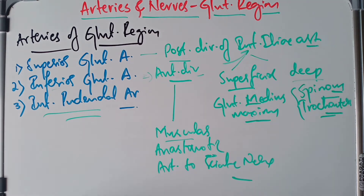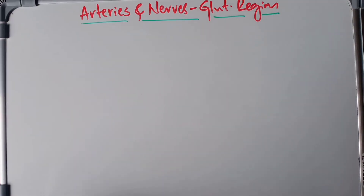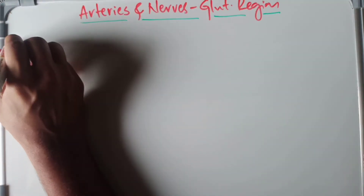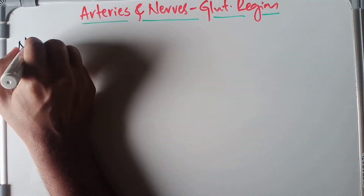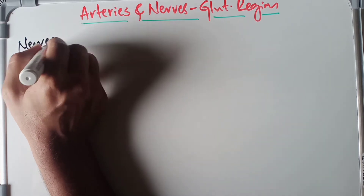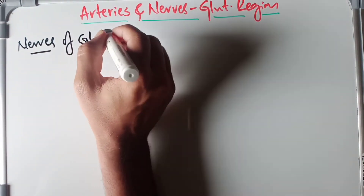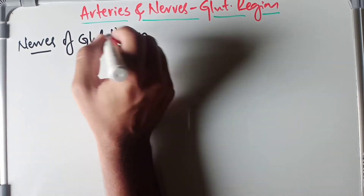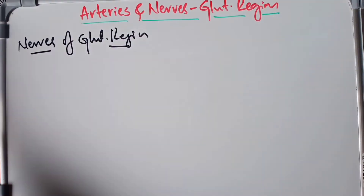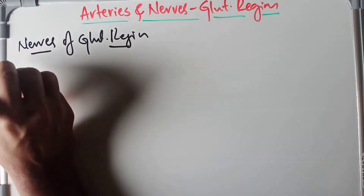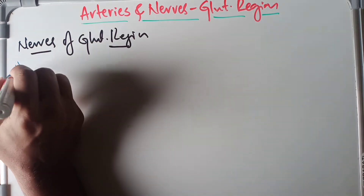Now we will move on to the nerves of the gluteal region. I'm Afshir, by the way — if you like the video, make sure to subscribe. So what are the different nerves found in the gluteal region? We actually have several nerves, which we are going to discuss in detail.